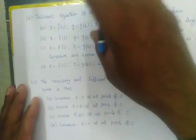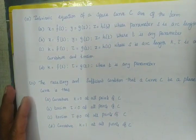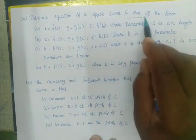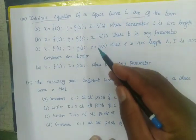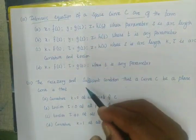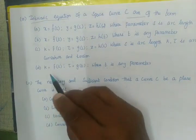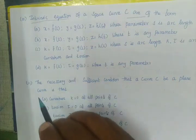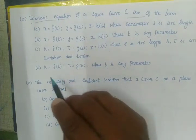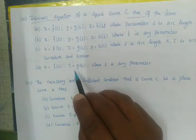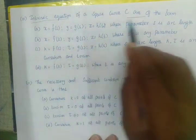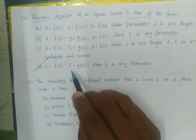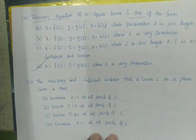The intrinsic equation of a space curve C is of the form: K equals f of t, and τ equals g of t, where t is any parameter. This is the right option for the intrinsic equation of a space curve.